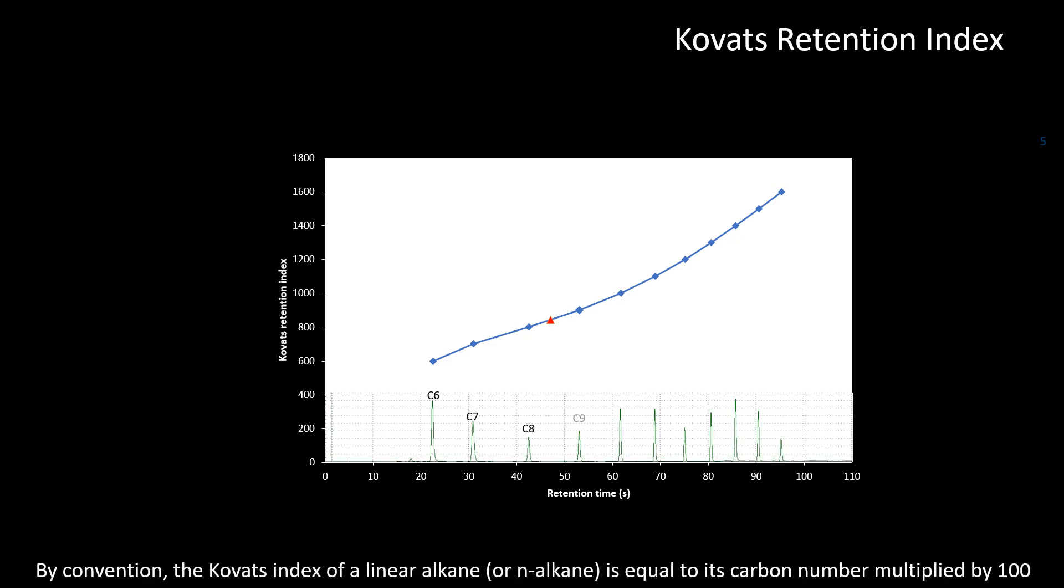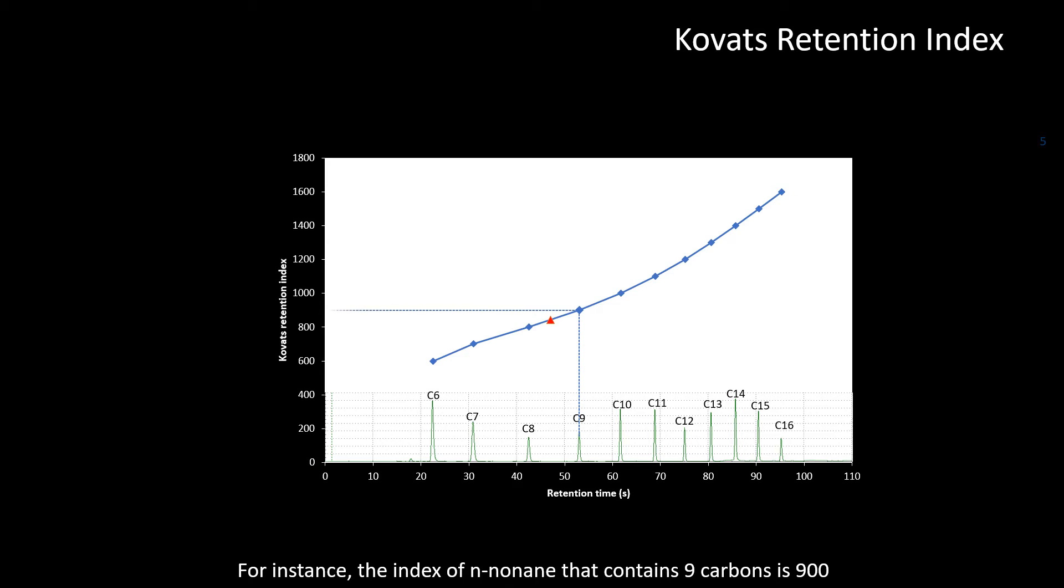...the Kovats index of a linear alkane or n-alkane is equal to its carbon number multiplied by 100. For instance, the index of n-nonane that contains 9 carbons is 900.